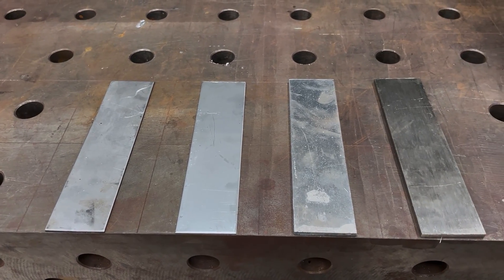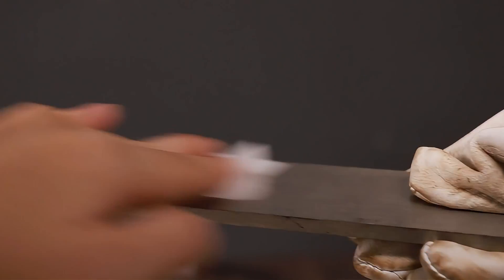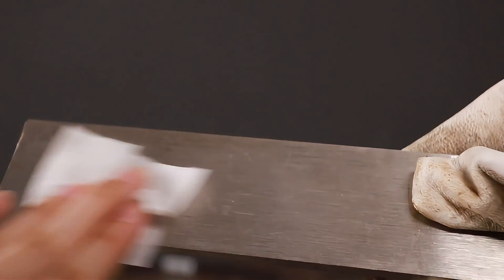Thick stainless steel absorbs and distributes heat better, reducing the risk of warping and distortion during welding. This makes it easier for beginners to handle. Ensure the stainless steel is thoroughly cleaned with a stainless steel brush and acetone to remove any contaminants.